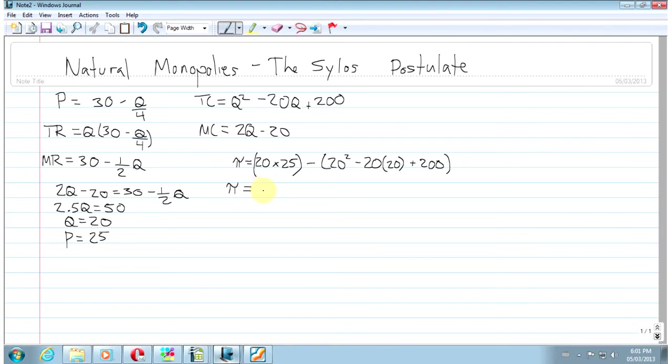So we're just left with 20 times 25 minus 200, which means that profit is... I'm going to grab my calculator here. I don't want to make a mistake.